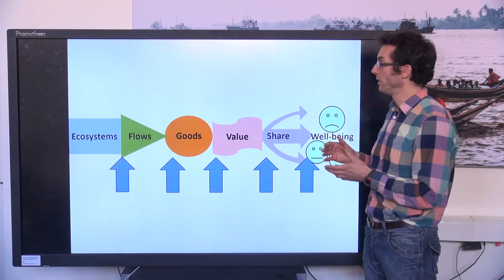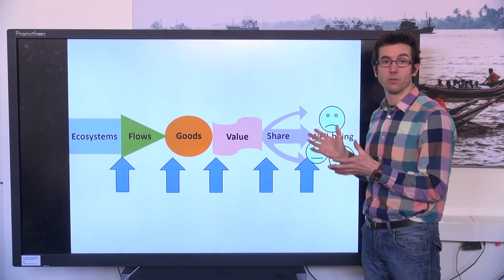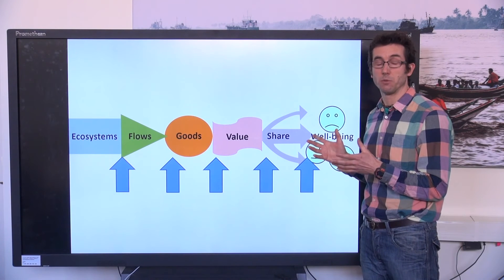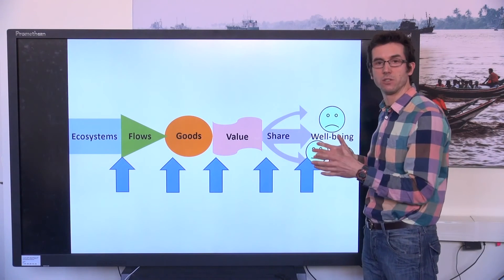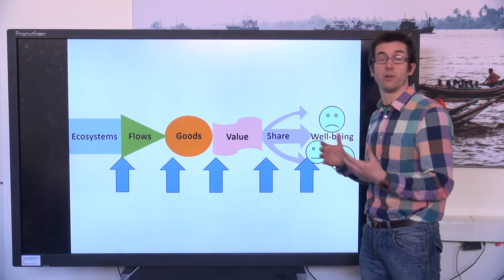So we use this framework to analyze five ecosystem services from coastal East Africa to try and understand which part of the chain are critical for determining that there's either a high or a low elasticity.